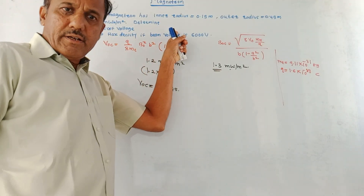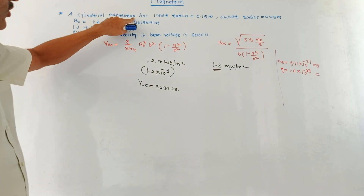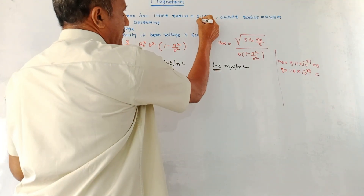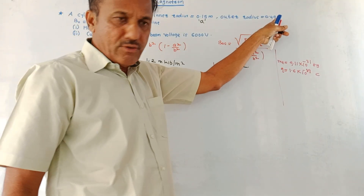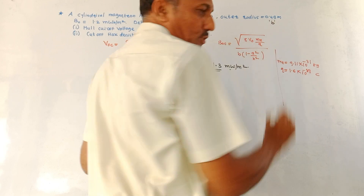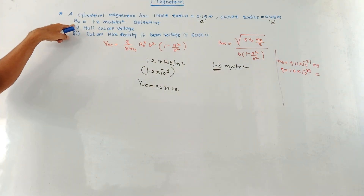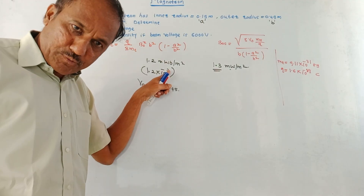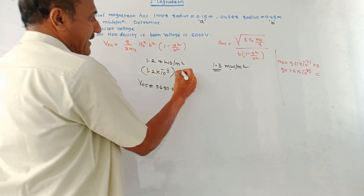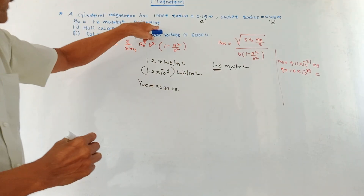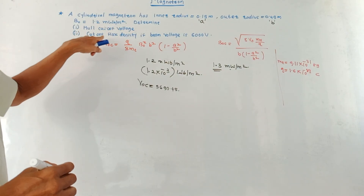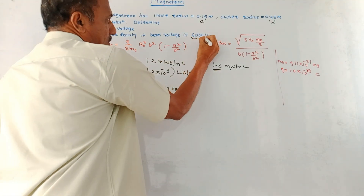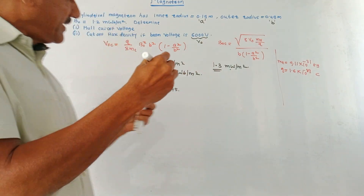Let us solve a numerical related to magnetron. A cylindrical magnetron has inner radius a = 0.15 m, outer radius b = 0.45 m, and magnetic flux density B₀ = 1.2 milli-Weber per meter square, which converts to 1.2 × 10⁻³ Weber per meter square. Determine: (1) Hull cutoff voltage, and (2) cutoff flux density if the beam voltage V₀ = 6000 V. This numerical is straightforward — you just need to memorize two formulae.